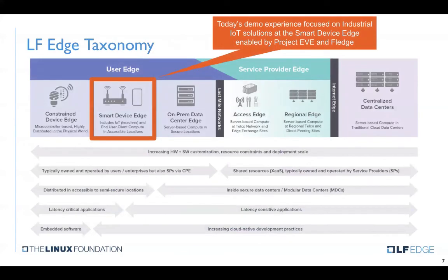Specifically today, we're talking about Project EVE and FLEDGE working together — EVE at the underlying orchestration layer and FLEDGE at the application stack — targeting smart devices. As defined in the taxonomy, this means compute distributed outside of a physically secure data center, but still capable of running apps, for IoT workloads. Not mobile devices, PCs, or tablets, but headless gateways, routers, hubs, servers — essentially any kind of compute. The whole point with EVE is it abstracts the complexity from that compute, regardless of whether it's x86 or ARM silicon, with any kind of application running on top. FLEDGE is focused on industrial IoT data.